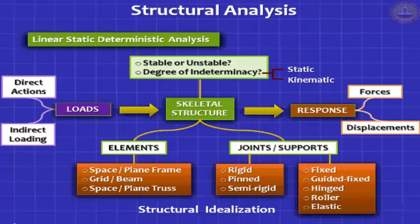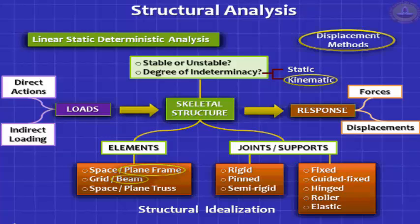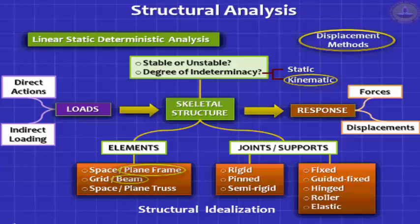In basic structural analysis, we make some assumptions. We assume that we are dealing with linear, static, deterministic analysis. As you advance, you will come to do non-linear, dynamic, probabilistic analysis. Our concern here is with kinematic indeterminacy and displacement methods. We have two categories of methods: force methods and displacement methods. On the right side, you have slope deflection method, moment distribution method, Kani's method, and the stiffness matrix methods.